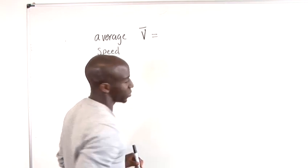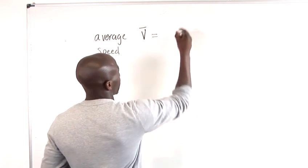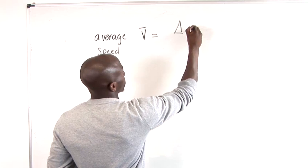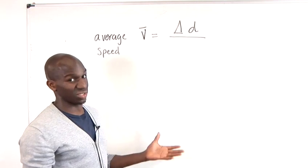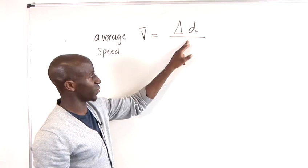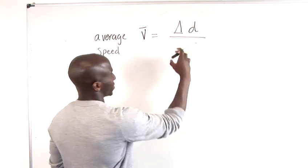I would denote distance by delta D and the time interval, the change in time that it takes for that body or the car or the athlete to run that distance.